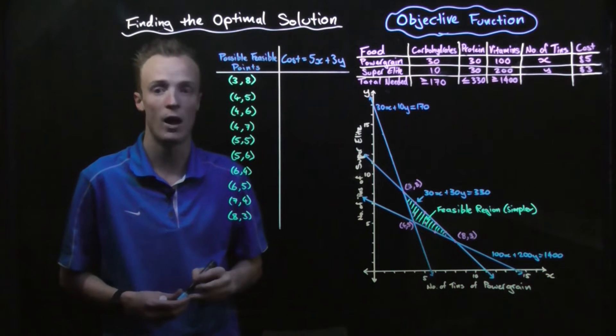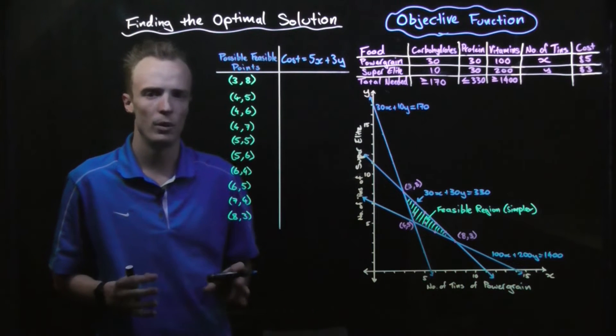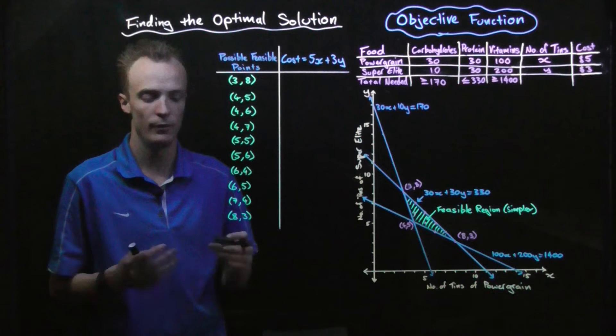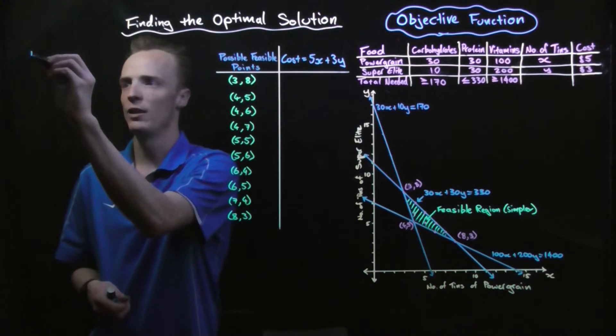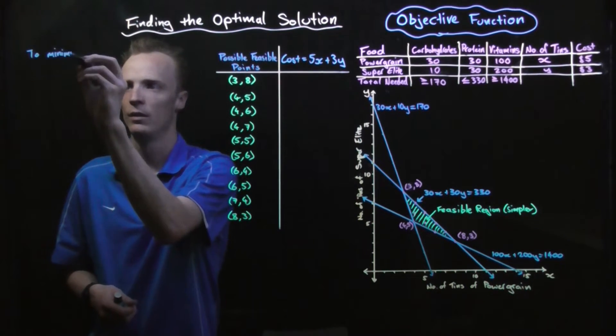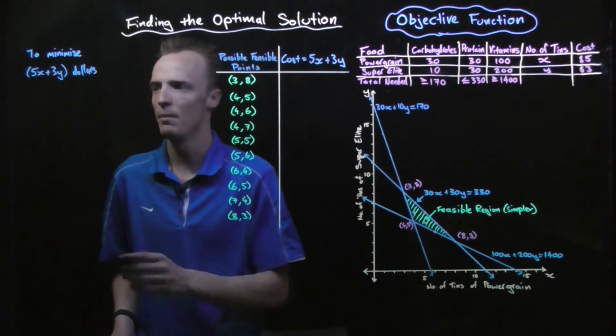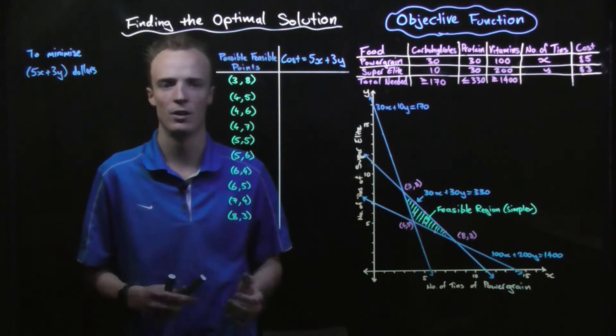What's really important with these sort of problems is we do state what our objective function is. So our objective function here is to minimise 5x plus 3y dollars.